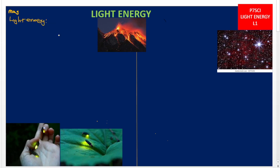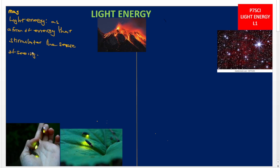Light energy is a form of energy that stimulates the sense of seeing. The sense of seeing is conducted by the sense organs called the eyes. We are able to see things around us because there is light.